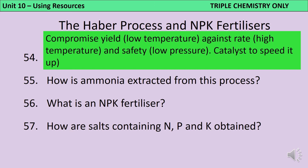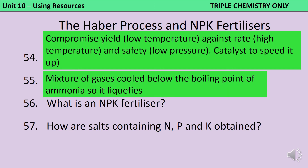Once ammonia is produced, it's mixed with unreacted nitrogen and hydrogen. The whole mixture is cooled below the boiling point of ammonia but above the boiling point of hydrogen and nitrogen — similar to fractional distillation but in reverse compared to crude oil. The ammonia turns back into a liquid and can be tapped off, while the nitrogen and hydrogen are recycled back into the reactor to be used again.